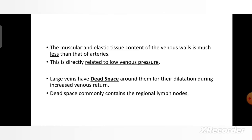The muscular and elastic tissue content of the venous wall is much less than that of arteries, and this is directly related to low venous pressure. The larger veins have dead space around them for their dilation during increased venous return.